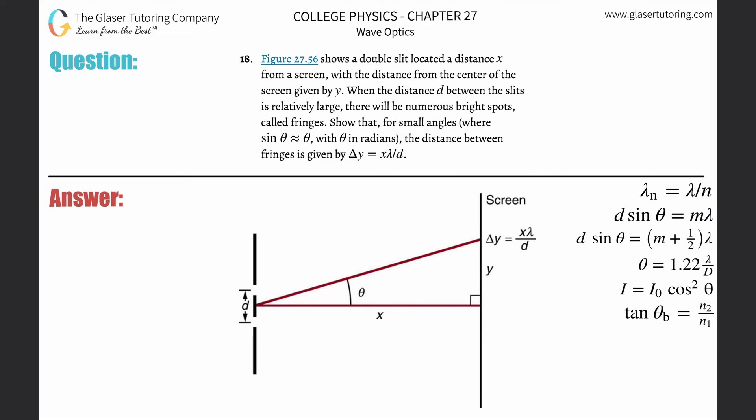Number 18, Figure 27.56 shows a double slit located at a distance x from a screen, with the distance from center of the screen given by y. When the distance d between the slits is relatively large, there will be numerous bright spots called fringes. Show that for small angles where sin θ is approximated to just θ with θ in radians, the distance between the fringes is given by the specified formula.